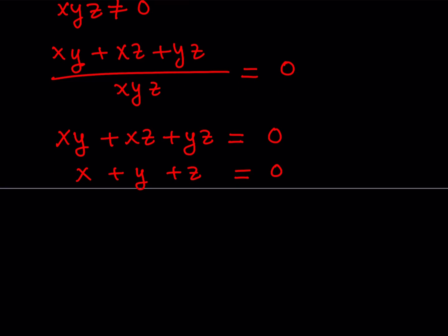Since x plus y plus z is equal to 0, when you square it, it's also going to be 0. So we can safely say that x plus y plus z quantity squared is also equal to 0.